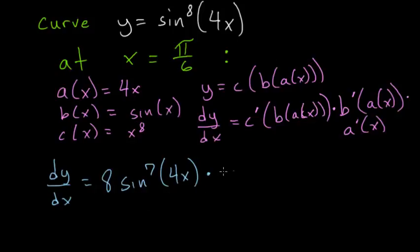this middle function, the sine of 4x. So that would be just the cosine of 4x. And then we have to multiply this by the derivative of